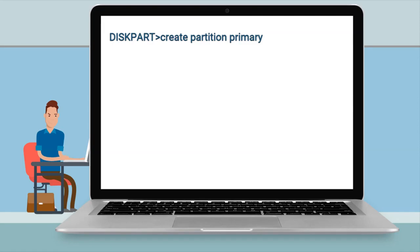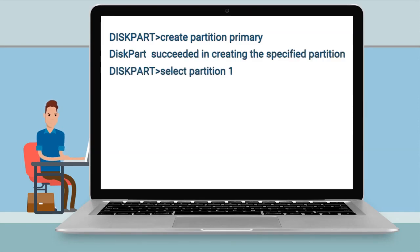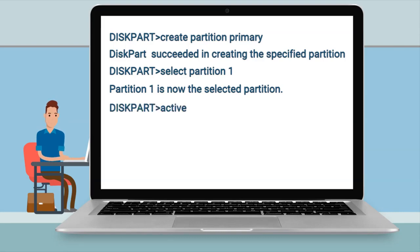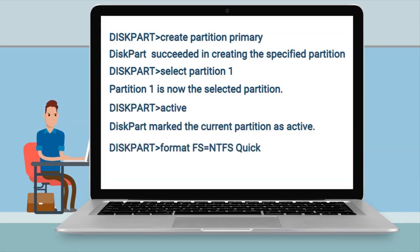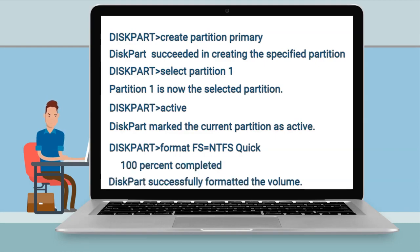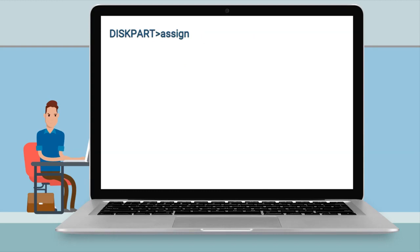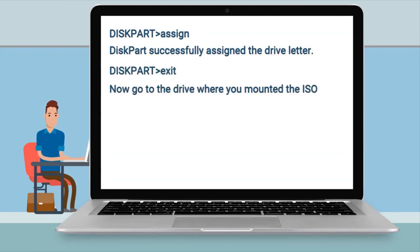Then you're going to create a partition primary, select partition 1, and lastly make it active. From there, you're going to format with the 'format fs=ntfs quick' command, which should format it fairly quickly. Then you'll assign a drive letter and exit out of the DiskPart utility.